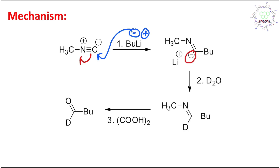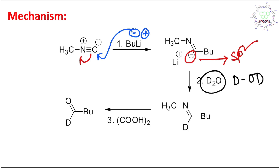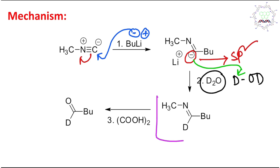Upon nucleophilic addition, the bond opens up and a hybridization change occurs, producing a carbanion. This negative charge is on an sp2 hybridized orbital, making it significantly basic. It then reacts with D₂O (heavy water) in a simple acid-base reaction, resulting in carbon-deuterium bond formation.